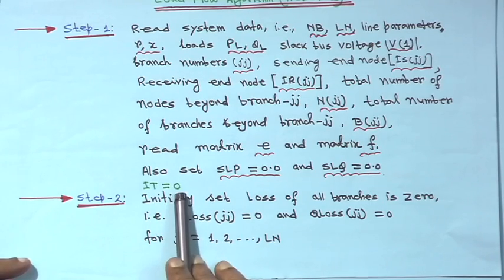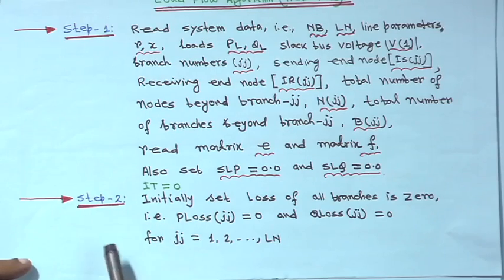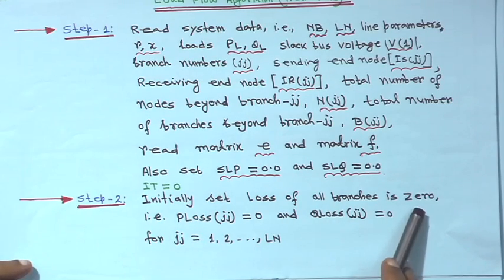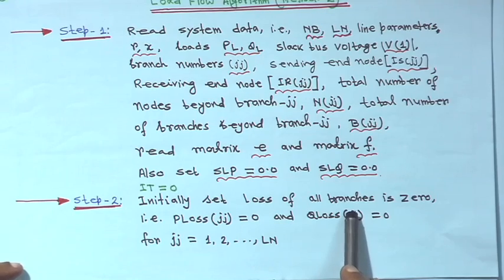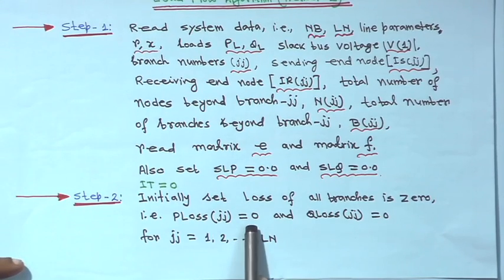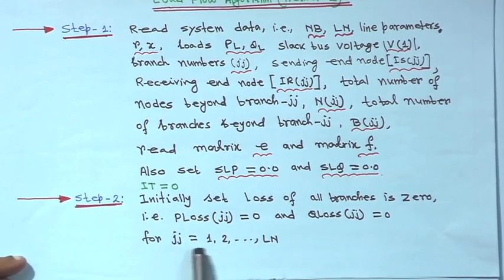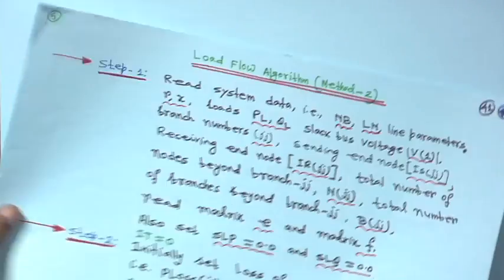Set iteration count equal to 0 — I have written I2 equals 0 in green color. Step 2: initially set loss of all branches to 0. For the second method, P loss jj equals 0 and Q loss jj equals 0 for all branches jj equals 1 to LN, where LN is the total number of branches.